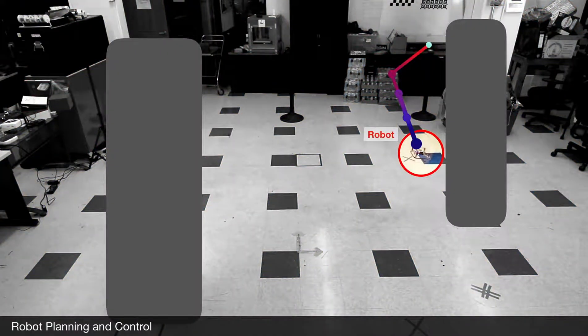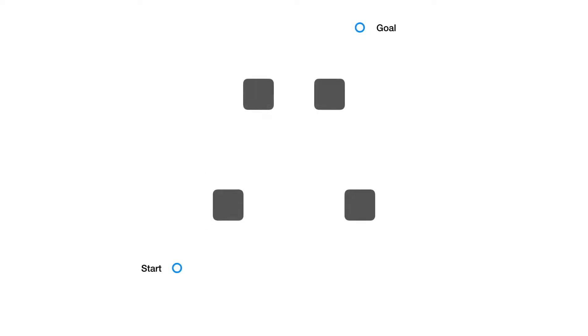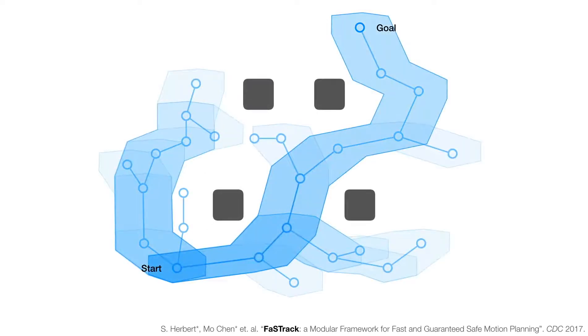First, consider the canonical problem of planning through an assumed static environment. We use the recent FastTrack framework to augment a simple motion planning algorithm with a tracking error bound that guarantees that the physical trajectory will remain within this bound.